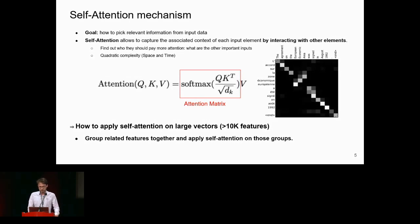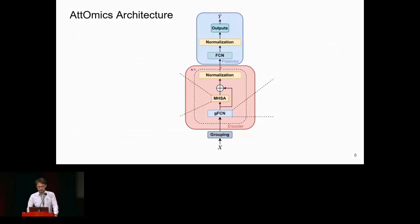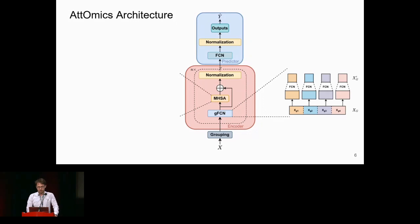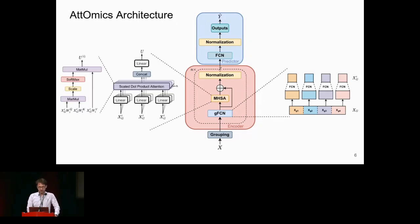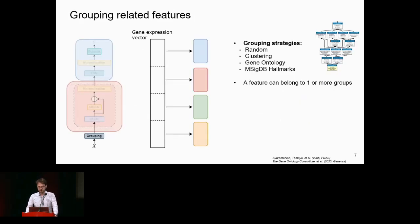This led to the AttOmics architecture, which has a grouping module that assigns each feature to a specific group. In the encoder, each group is projected into a lower-dimensional space, multi-head self-attention is applied to the set of groups, and then those groups are passed to the predictor.